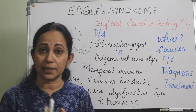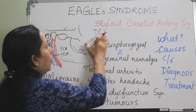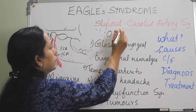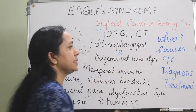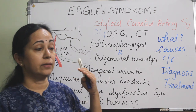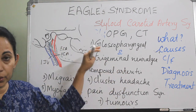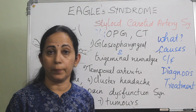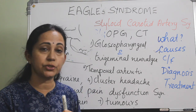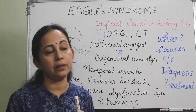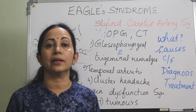Diagnosis is based on clinical history, physical examination including palpation of the styloid process, and radiological investigations. An orthopantomogram can be used. CT scan of the neck with 3D reconstruction is considered the gold standard for diagnosis of the elongated styloid process and the stylohyoid ligament complex.